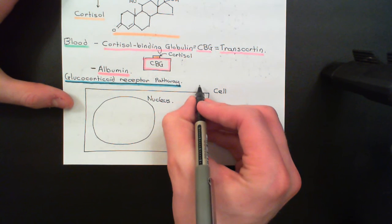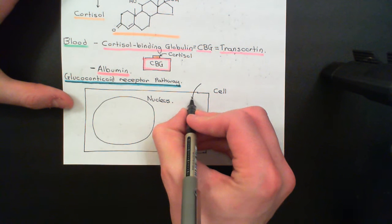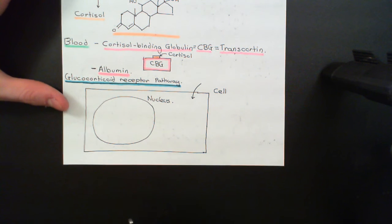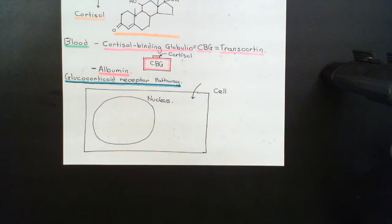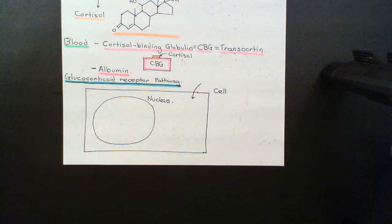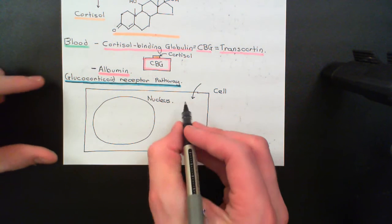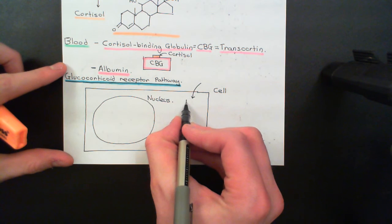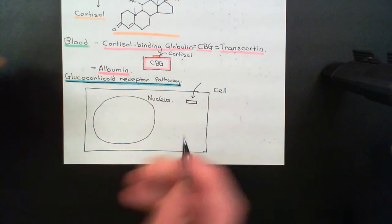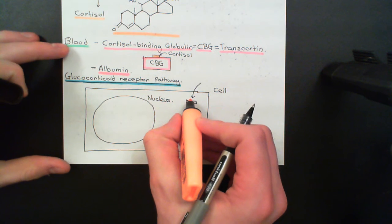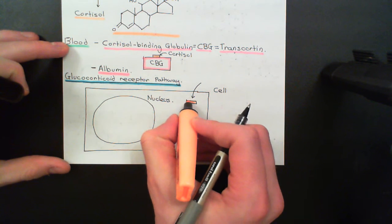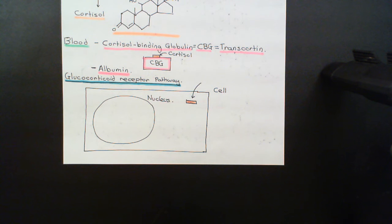What's going to happen first is that cortisol molecules are going to come into the cell. They're still reasonably lipid soluble, even with all of the alcohol groups having been added onto the steroid structure to create cortisol. So cortisol is still reasonably lipid soluble and can get across the cell membrane just by passing through it. Here's our cortisol now inside the cytoplasm of the cell.